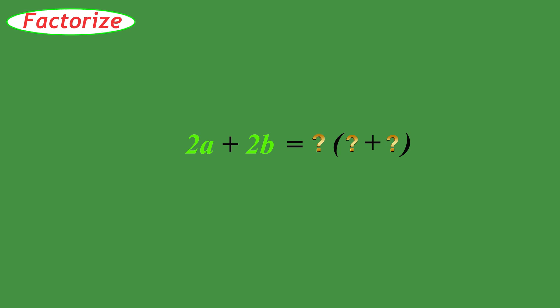Let's do an example. Factorize 2A plus 2B. What factor that is common to both 2A and 2B can go in front of the parentheses? It's 2. So 2 times what equals 2A? It must be A. And 2 times what equals 2B? It must be B.